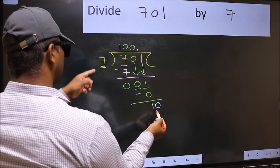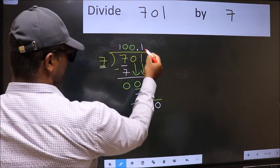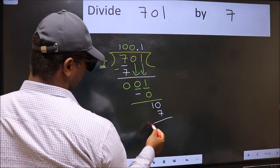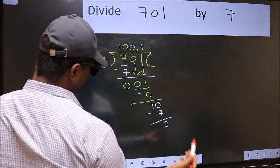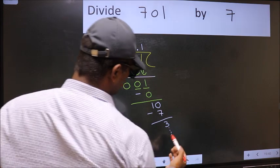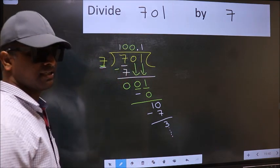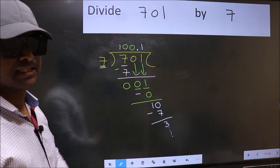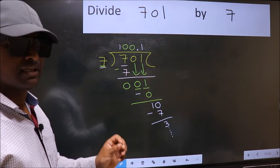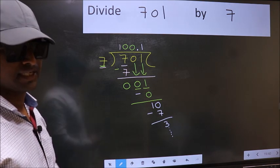A number close to 10 in the 7 table is 7 once 7. Now, we should subtract. We get 3. And you continue the division. I am not doing that. Did you understand where the mistake happens? You should not do that mistake.